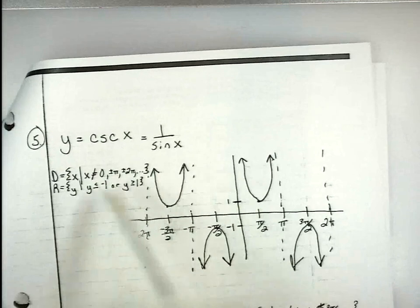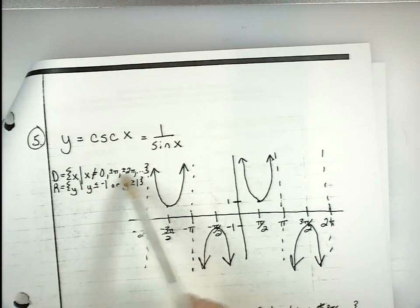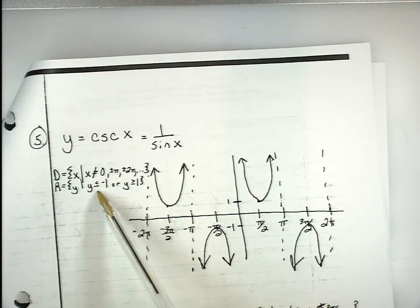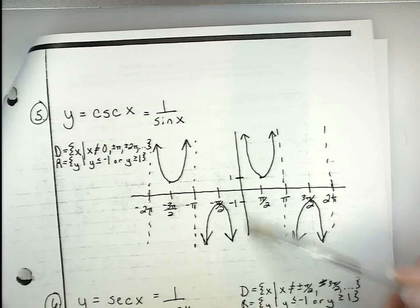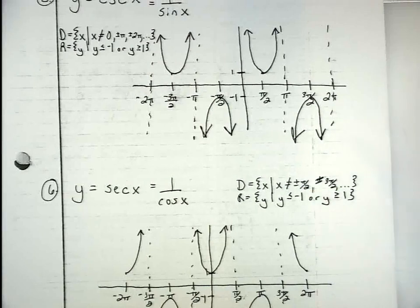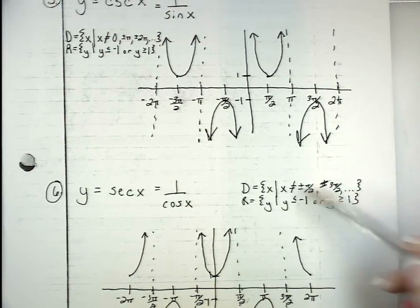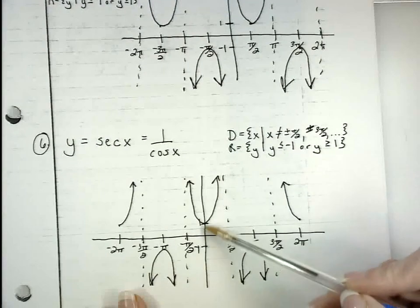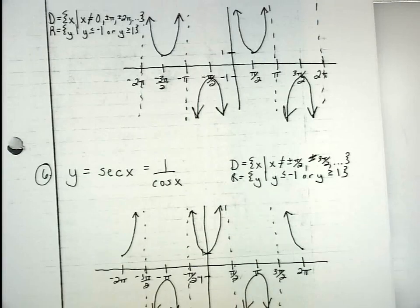On the second sheet you will see secant and cosecant. Cosecant is 1 over sine, so x cannot be 0, ±π, ±2π — those are your vertical asymptotes where the function is undefined. The range is y ≤ −1 or y ≥ 1. For secant, which is 1 over cosine, x cannot be ±π/2, ±3π/2, ±5π/2 — increments of π/2. The range is also always y ≤ −1 or y ≥ 1. Make sure that you know the six basic trig functions, their domains, and their ranges — you should already know this from a trig class or Calculus 1.